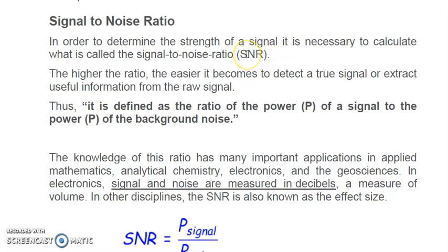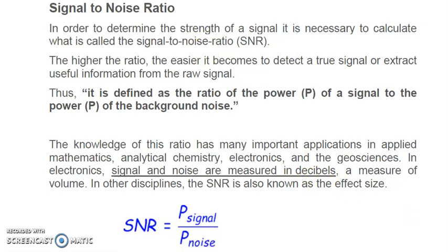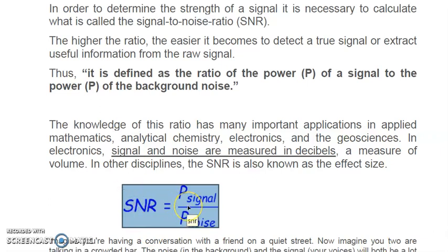In a communication system, both signal and noise are audible. Both may be voice, both may be voltage, both may be current. So signal to noise ratio becomes a dimensionless quantity. The formula is: signal to noise ratio equals power of signal divided by power of noise.